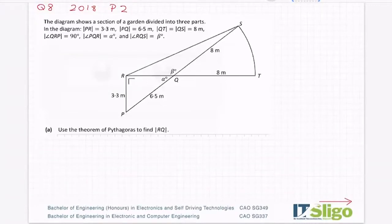Okay, so let's have a look at question 8, 2018. The diagram shows a section of a garden divided into three parts. In the diagram, the length of PR is 3.3 meters. The length of PQ is 6.5 meters and the length of QT is equal to QS.